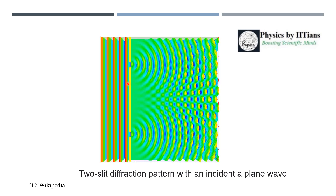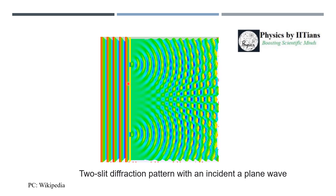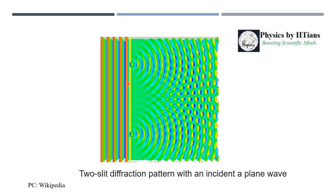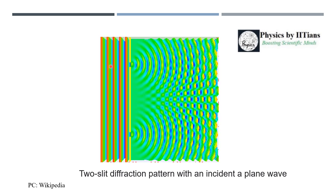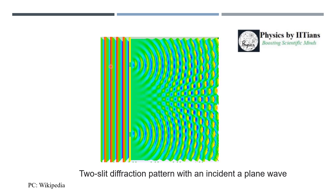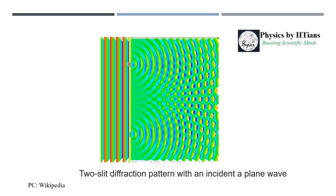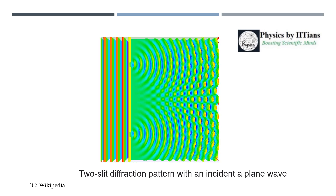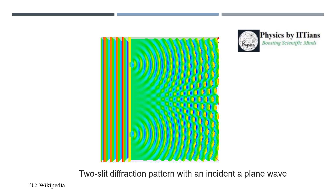This is a very well-known phenomenon of waves. Now, what happens if we replace the wave with electrons, which are particles, and pass them through the slits? What will we observe on the screen? That is the question.